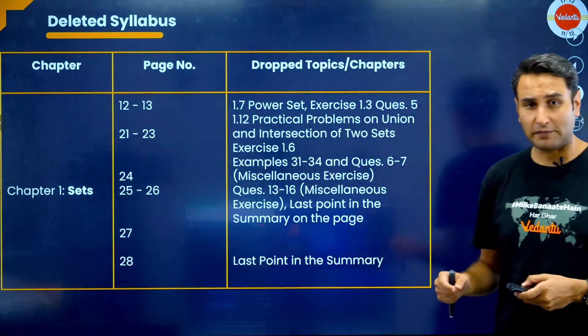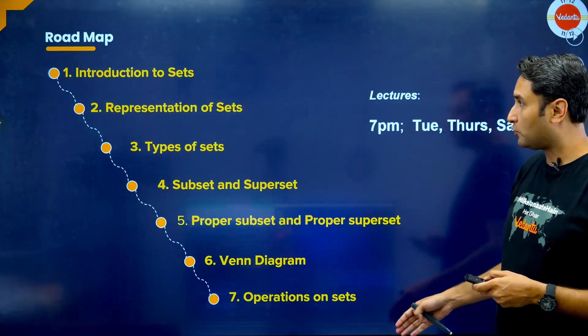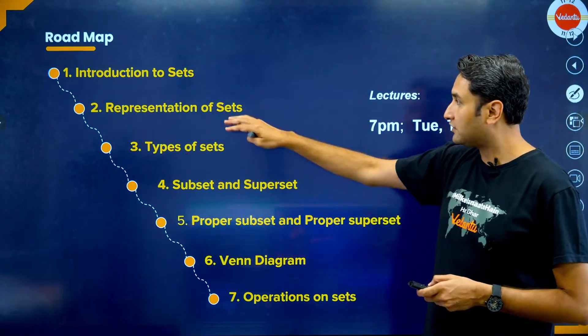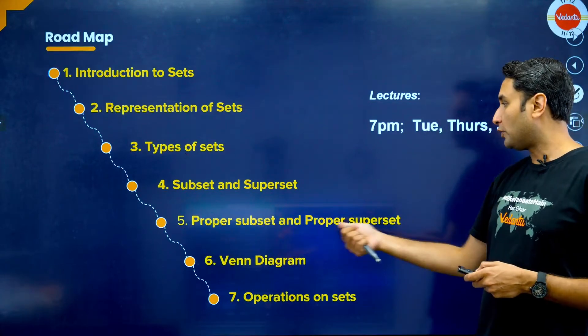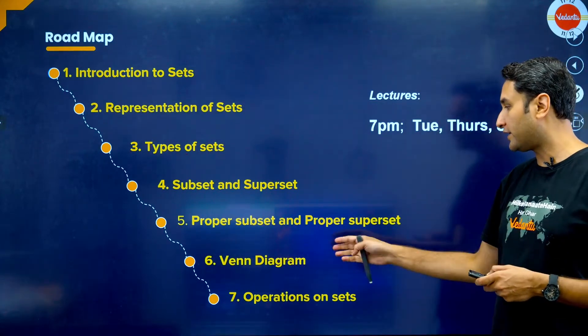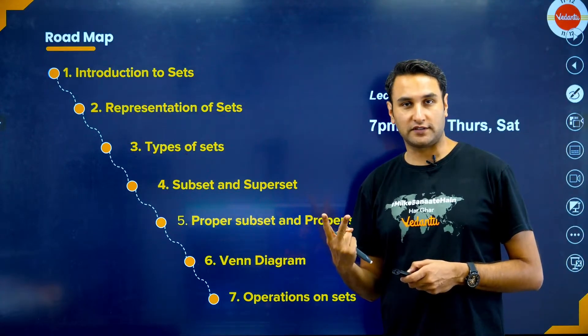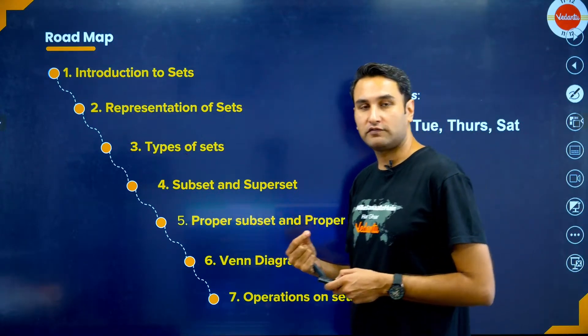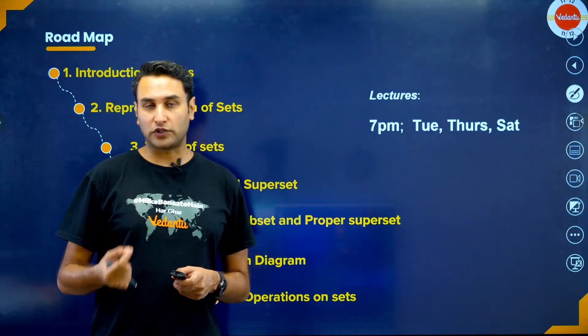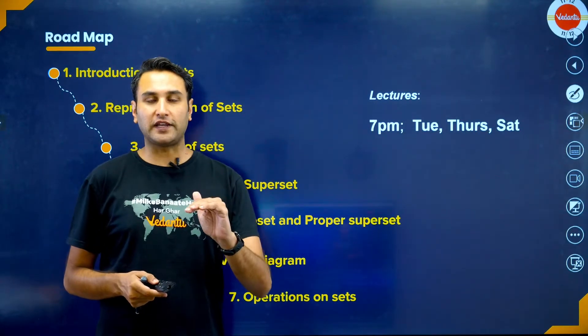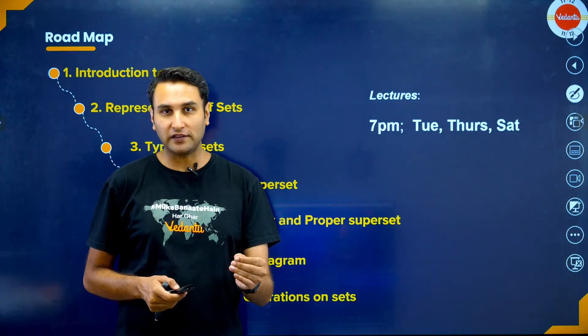This is the entire roadmap: introduction to sets, representation of sets, types of sets, subset, superset, proper subset and proper superset, Venn diagrams, and operations on sets. I'll take around two classes to finish this. My each class will be approximately 45 minutes to one hour. I'll try to wrap up my classes in 40-45 minutes because I know this is your attention span.